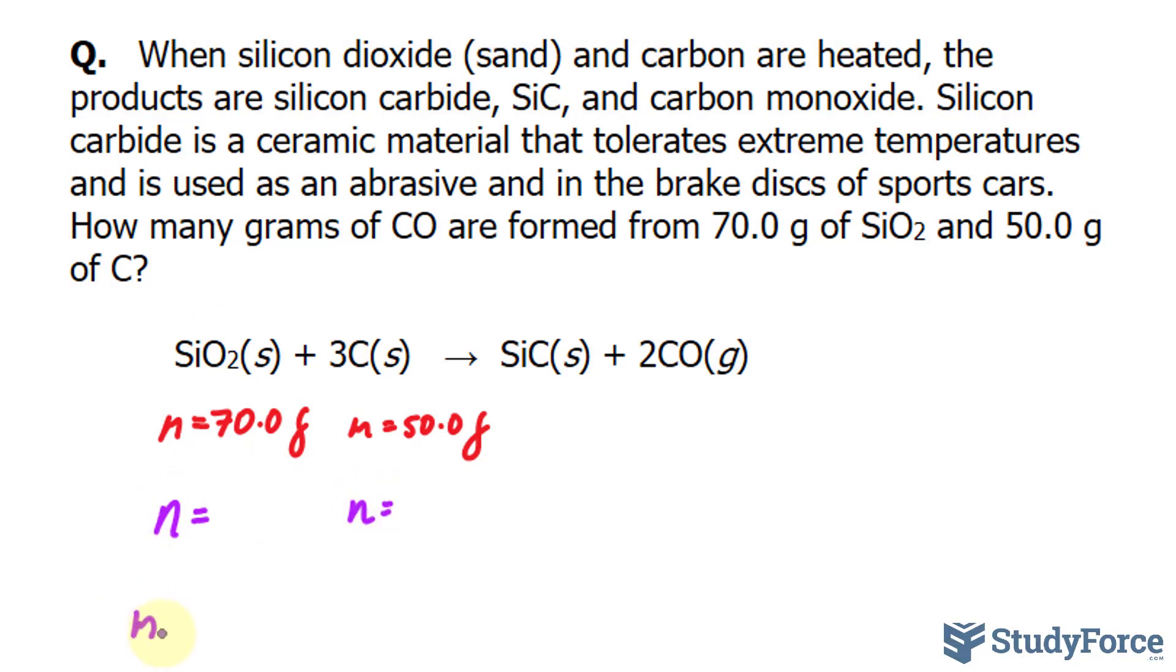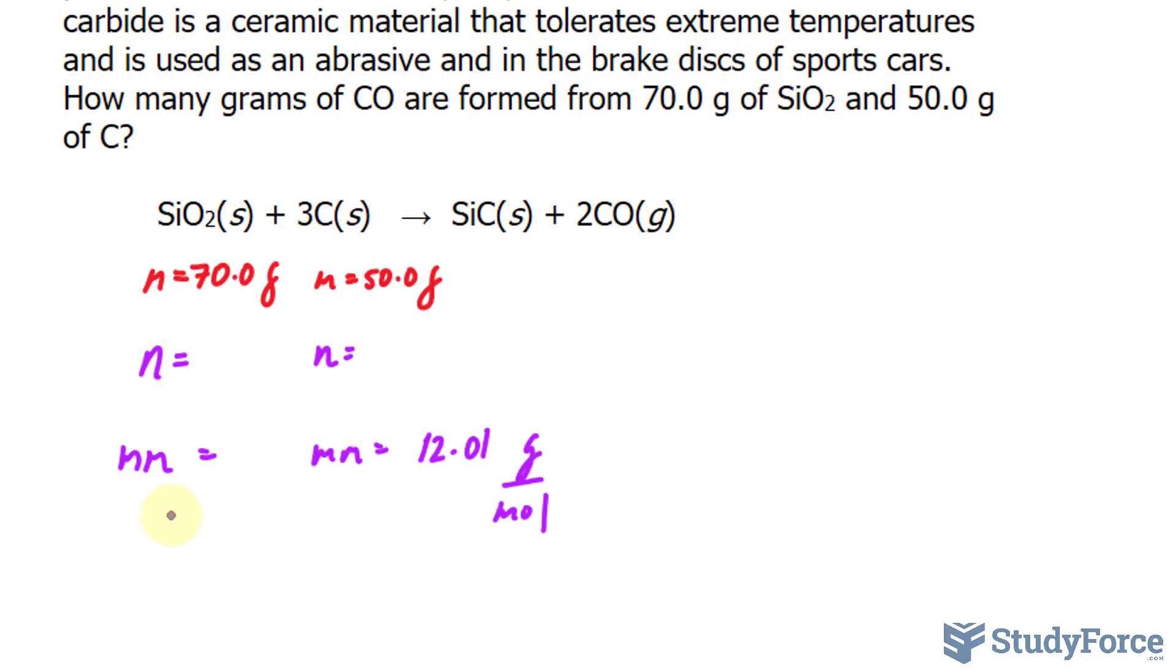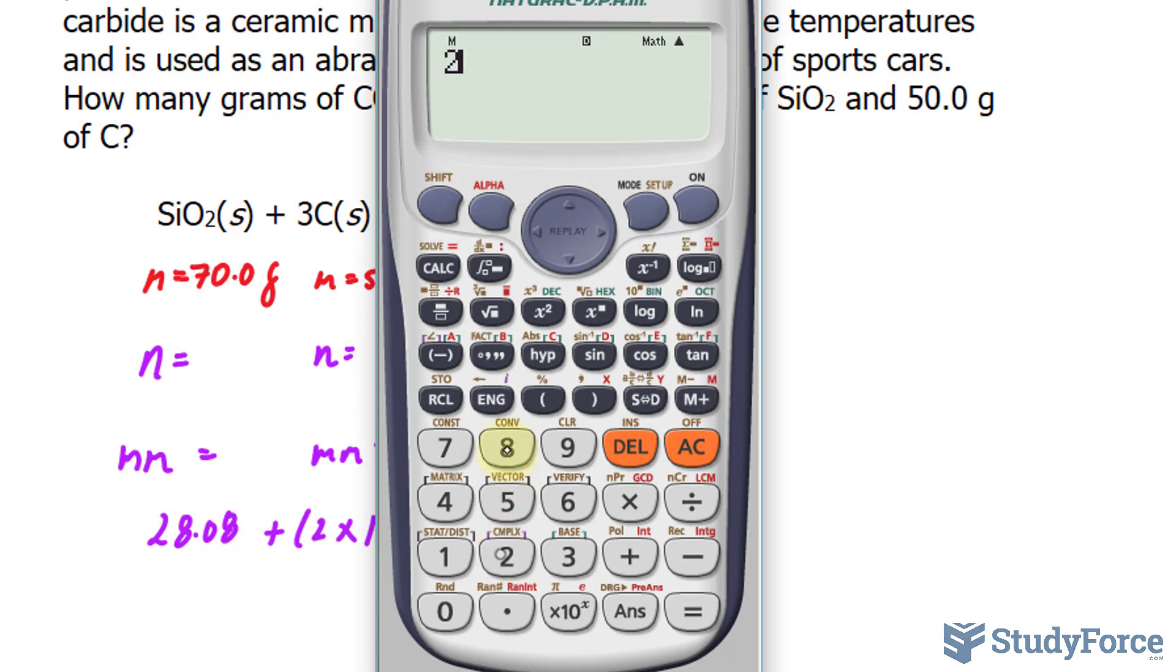And for that, we'll need the periodic table. The molar mass of carbon is 12.01 grams per mole. The molar mass of Si, silicon, is 28.08. Let me write that down. 28.08 plus we have two atoms of oxygen, so I'll add two times the molar mass of oxygen, which is 16.00. So using our calculator, 28.08 plus 32 is 60.08 grams per mole.